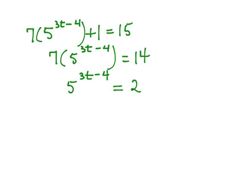There's no way to write those to the same base, so we can't use the one-to-one property. So we can either take the natural log or the common log, whichever one you prefer, of both sides. I'm going to take the common log. So the log of 5 to the 3t minus 4 power equals the log of 2.